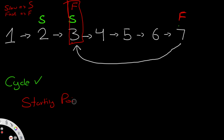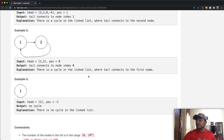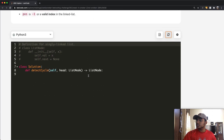To recap: first we find the cycle using slow and fast pointers. If there is no cycle, we return null. If there is a cycle, we store the fast pointer's position, then use a new pointer starting at the head — both move one step per iteration until they reach a common point, which is the starting node of the cycle. In this case that's three, and that's what we return.